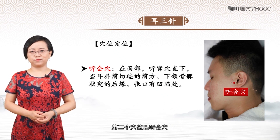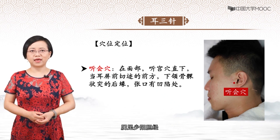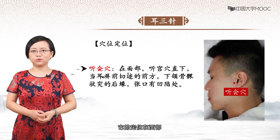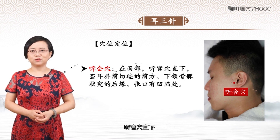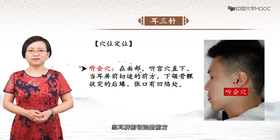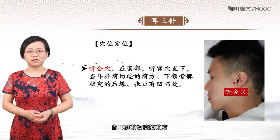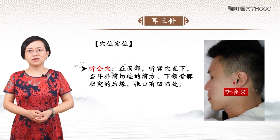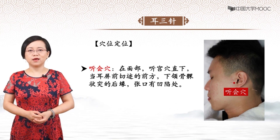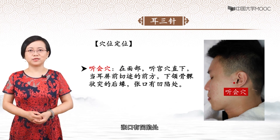第二个穴位是听会穴，属足少阳胆经。它的定位在面部，听宫穴直下，耳屏前切迹的前方，下颌骨髁状突的后缘，张口有凹陷处。